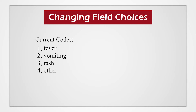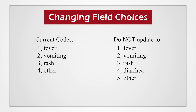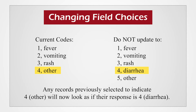If you need to update the choices to include diarrhea, do not update the codes to 1 for fever, 2 for vomiting, 3 for rash, 4 for diarrhea, and 5 for other. If the data is improperly recoded so that 4 for other changes to 4 for diarrhea after data has already been collected, any records previously selected to indicate 4 as other will now look as if the response is diarrhea. While it's possible that the case may have chosen other and written in diarrhea, it's not guaranteed diarrhea was the other symptom.